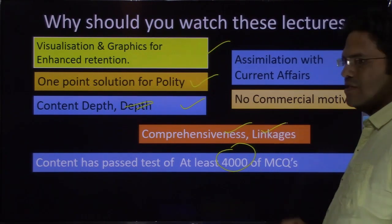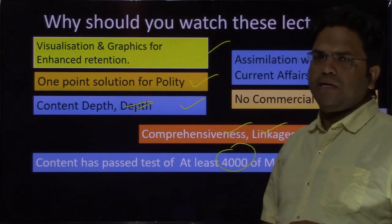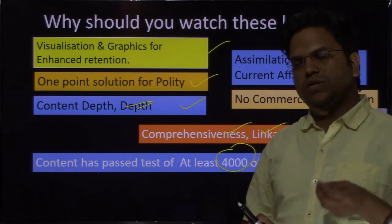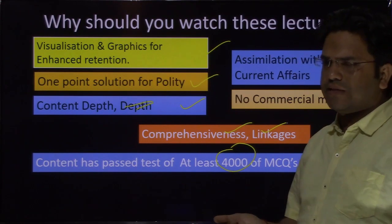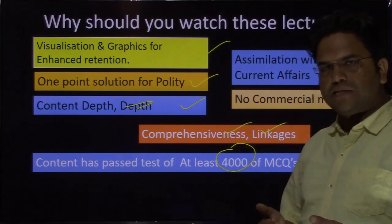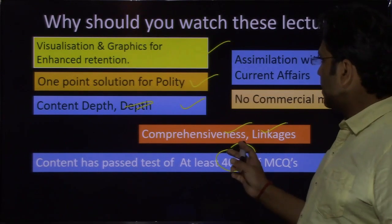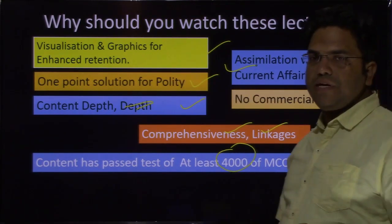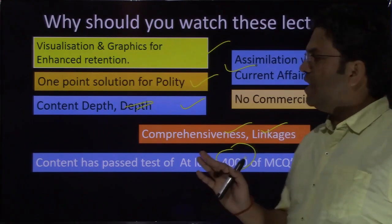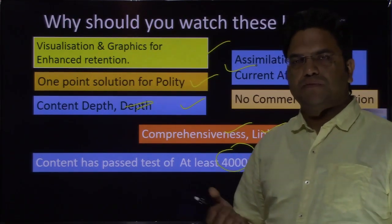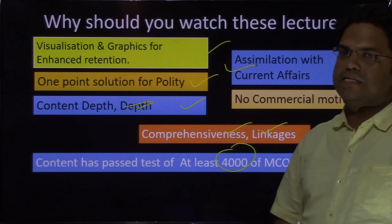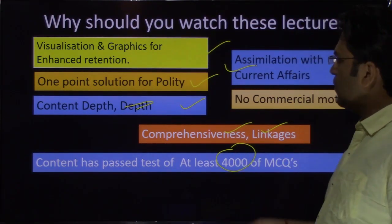Then comprehensiveness and linkages. While discussing acts, I have not limited myself to the polity portions. Wherever history could be included — even world history — I have tried to include it. Discussing the 1773 Act requires world history context. Wherever economy linkages were possible, those have been drawn. Then, assimilation with current affairs: the Citizenship Amendment Act has passed, so the citizenship chapter will also discuss that amendment. Kashmir's special provisions — when we cover that, the change in Kashmir's status will be discussed. Wherever current affairs assimilation is needed, it will be included.